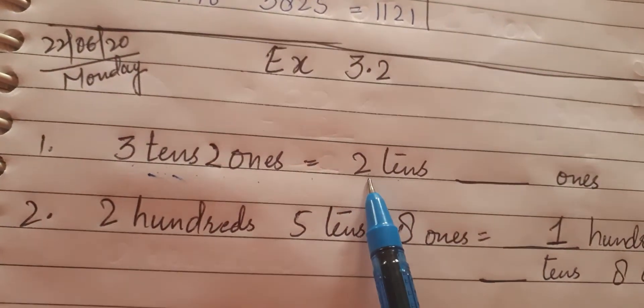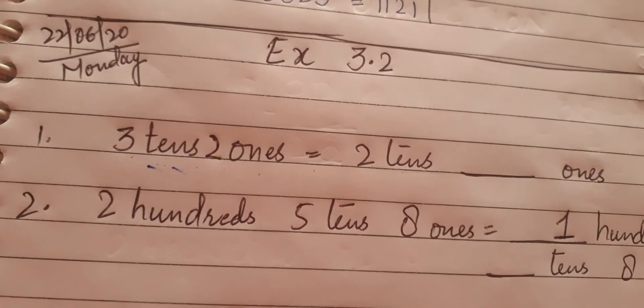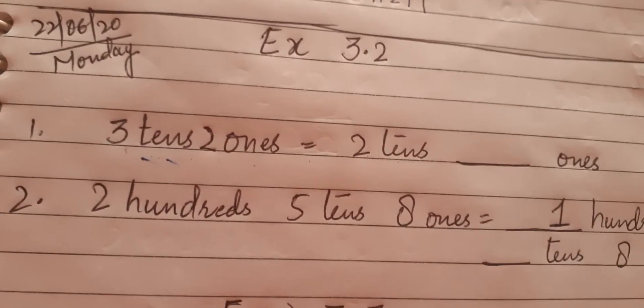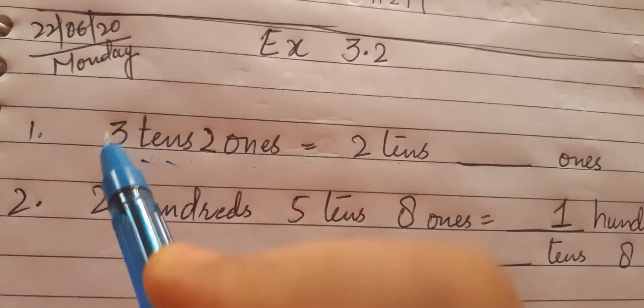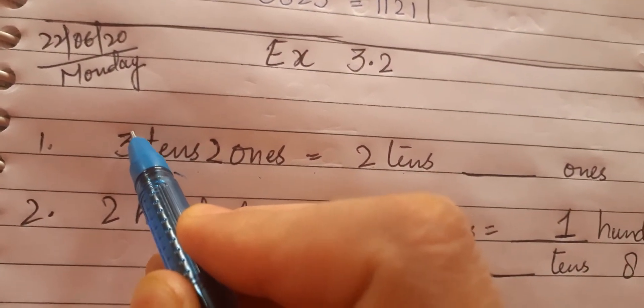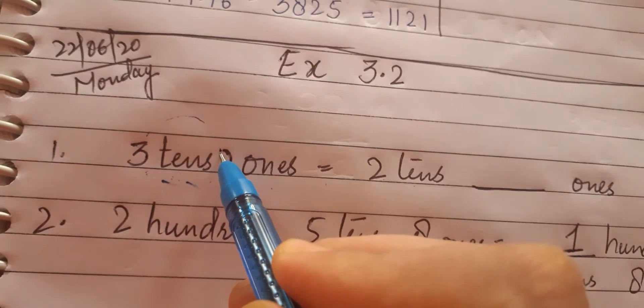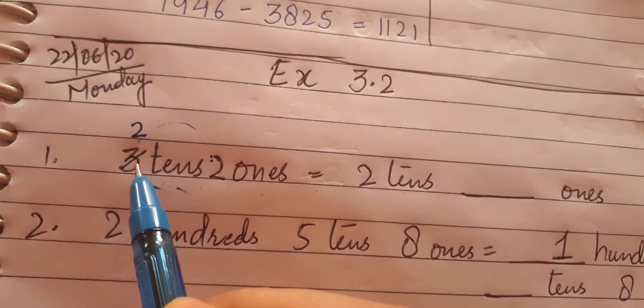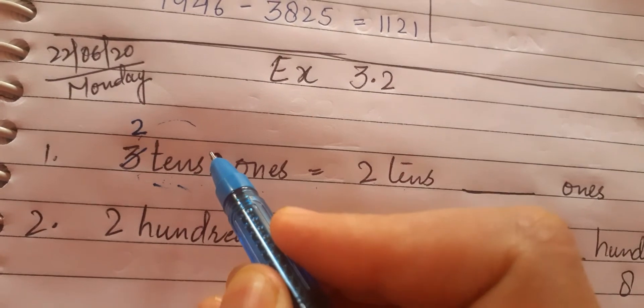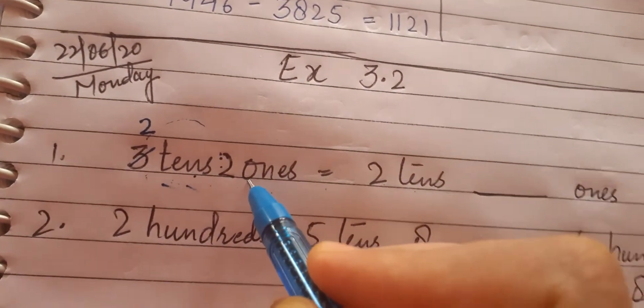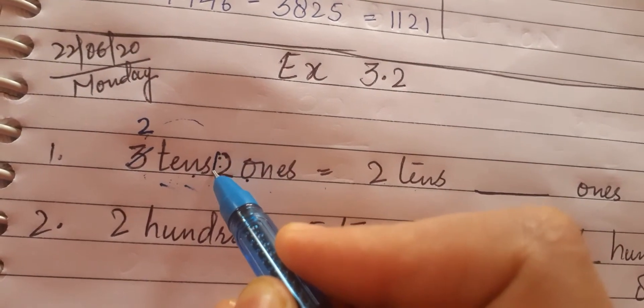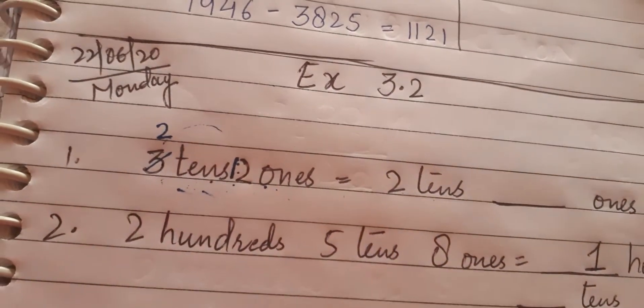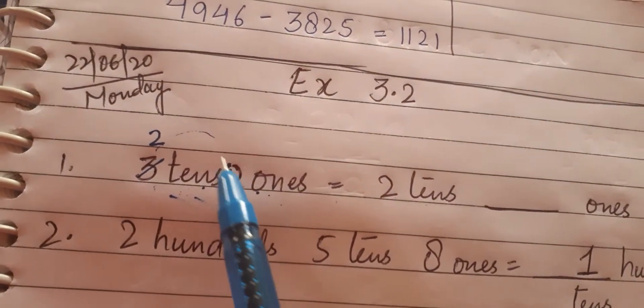How has this 3 tens changed to 2 tens? It has become 2 by giving one of the number to another place. We know a number becomes less when it gives one of the number to the other place. So 3 has become 2 because this 3 has given one of the number to its other place, which is ones place. The one that 3 tens has given will be taken by ones place because tens is followed by ones.